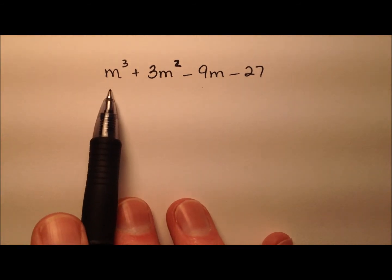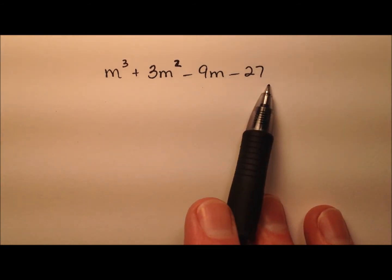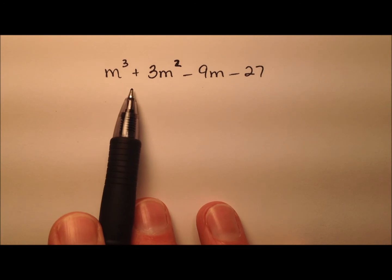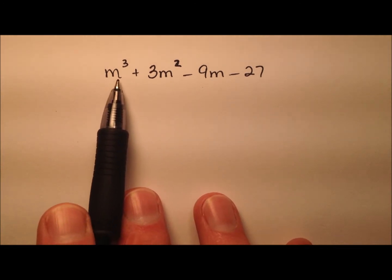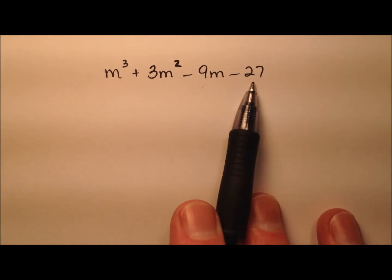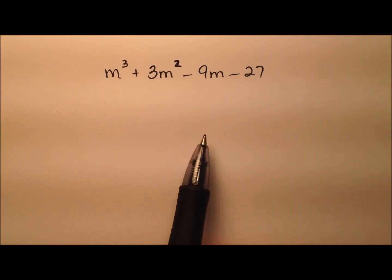In this example, we're going to factor this algebraic expression. So the first thing we always look for is a greatest common factor, but since the first term has only m's and the last term has only numbers, we know there's no greatest common factor.